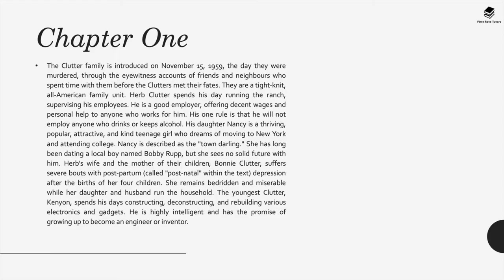Nancy has long been dating a local boy named Bobby Rupp, but she sees no solid future with him. Herb's wife and the mother of their children, Bonnie Clutter, suffers severe bouts with postpartum depression after the birth of her four children, and remains bedridden and miserable while her daughter and husband run the household. The youngest Clutter, Kenyon, spends his days constructing, deconstructing, and rebuilding various electronics and gadgets. He is highly intelligent and has the promise of growing up to become an engineer and inventor.